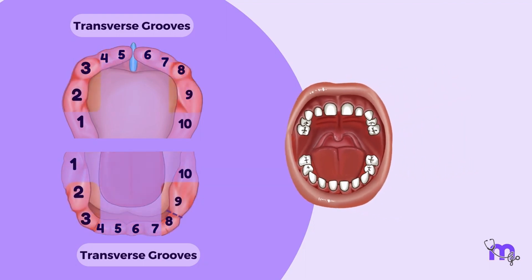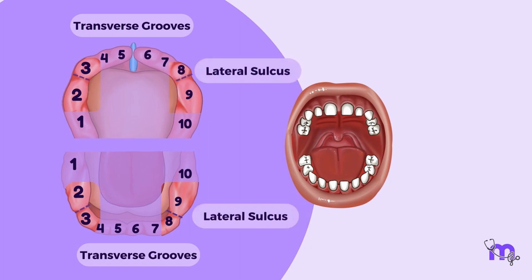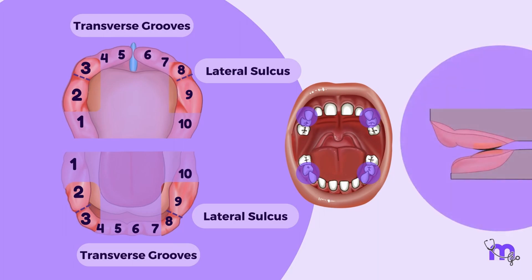The most prominent is the lateral sulcus — the groove between the deciduous canine and the deciduous first molar — which determines the relationship between the upper and lower gum pads at an early age.